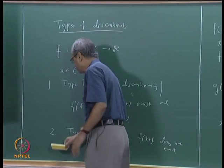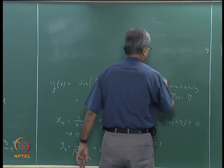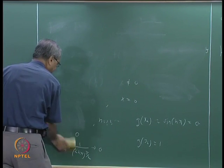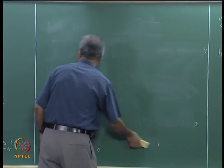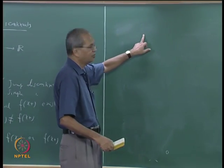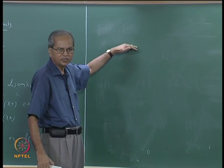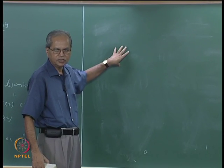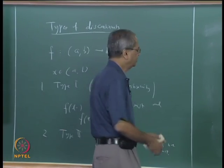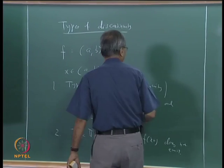Now we shall consider a class of functions you are familiar with: monotonic functions. We will see that monotonic functions have the interesting property that they cannot have Type 2 discontinuities. For example, ⌊x⌋ is monotonically increasing and only has Type 1 discontinuities. Let us recall the definition of a monotonic function, conveniently stated on an open interval.